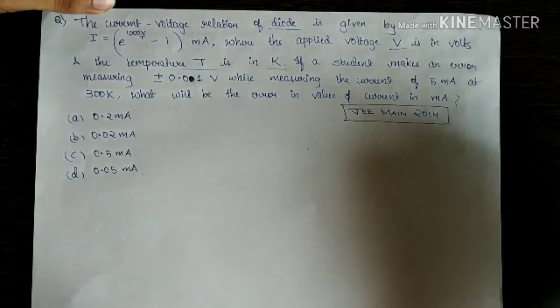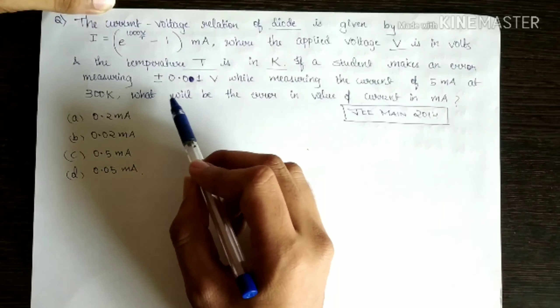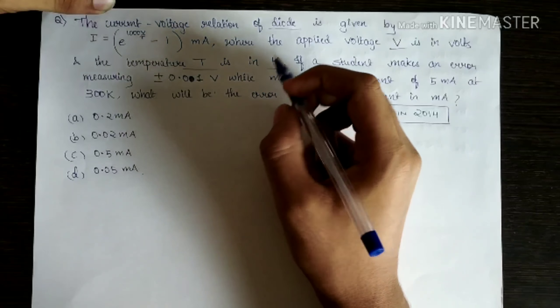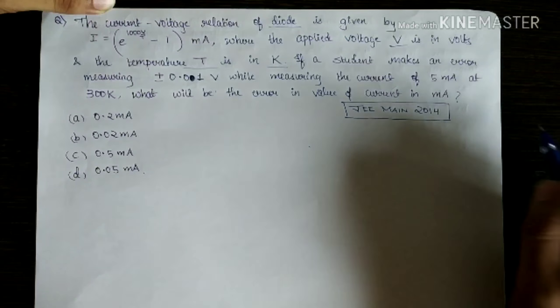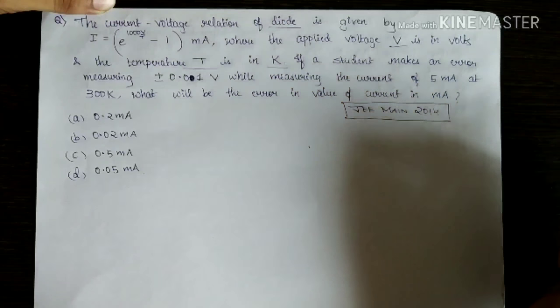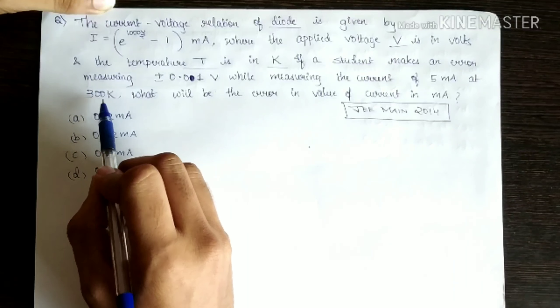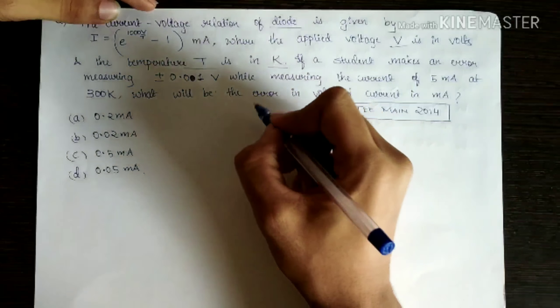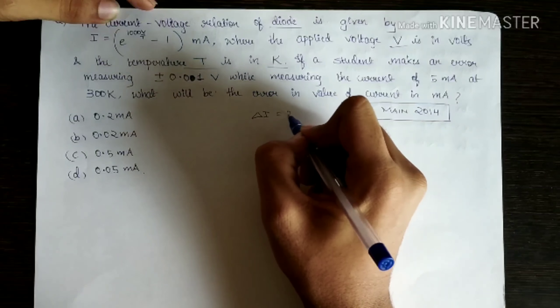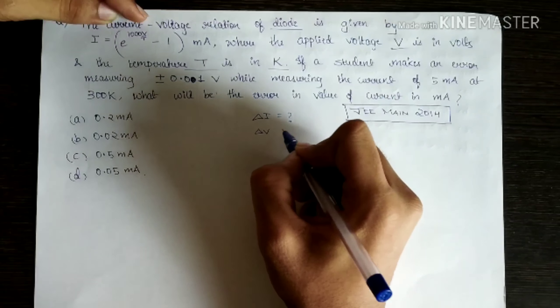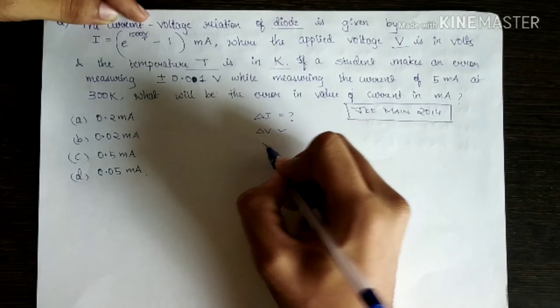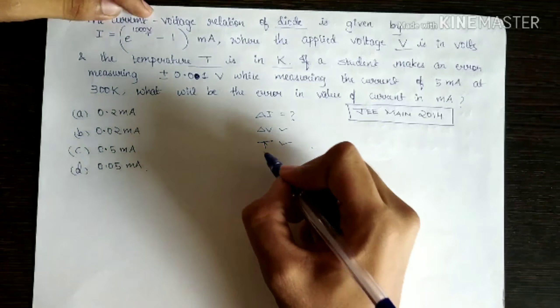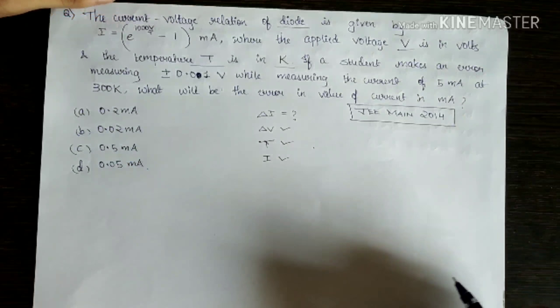If a student makes an error measuring the voltage of 0.01 volts, plus or minus 0.01 volts, while measuring the current of 5 milliamps at 300 Kelvin, then what will be the error in value of current? They want delta I. Delta V is given, temperature T is given, I is also given. These are the things which are given to us.